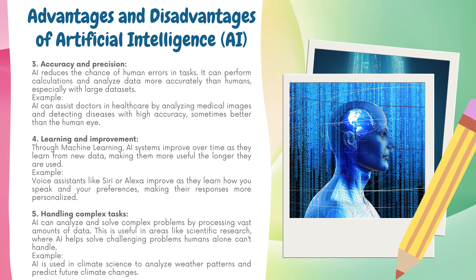Learning and improvement: through machine learning, AI systems improve over time as they learn from new data, making them more useful the longer they are used. Example: voice assistants like Siri or Alexa improve as they learn how you speak and your preferences, making their responses more personalized. Handling complex tasks: AI can analyze and solve complex problems by processing vast amounts of data. This is useful in areas like scientific research, where AI helps solve challenging problems humans alone can't handle. Example: AI is used in climate science to analyze weather patterns and predict future climate changes.